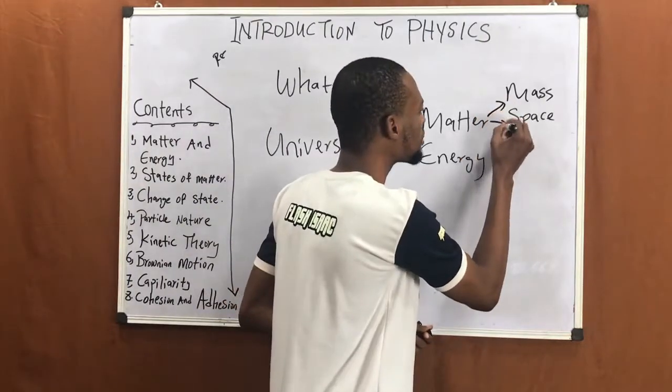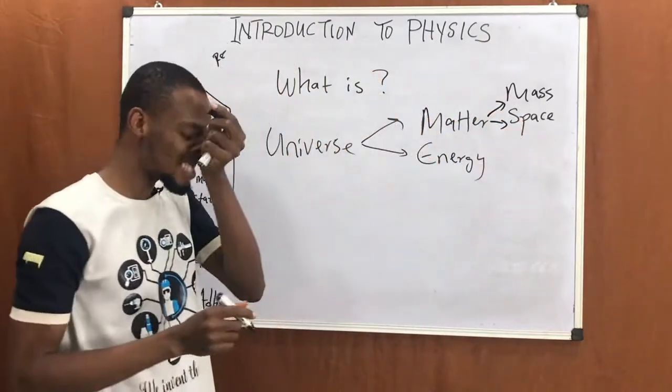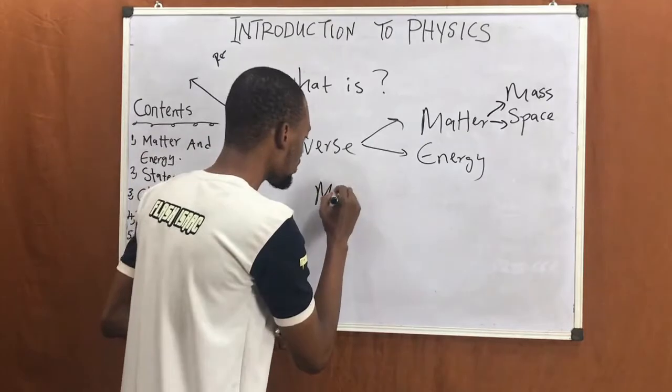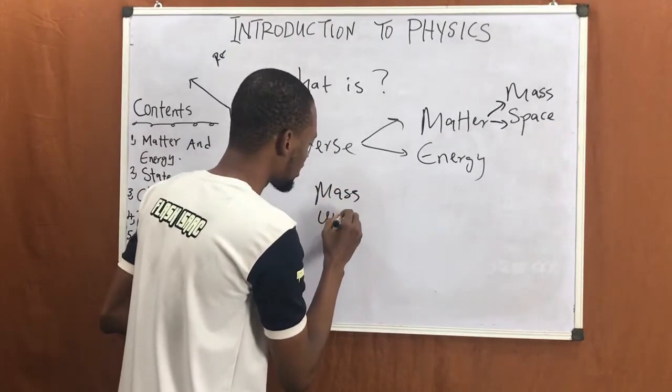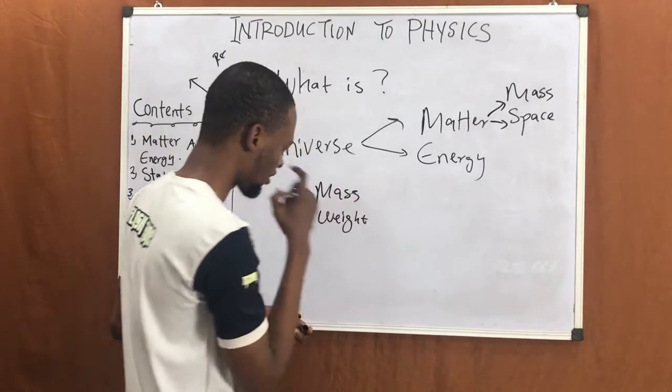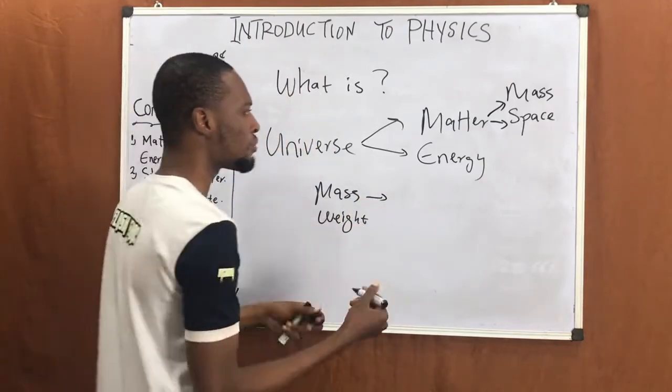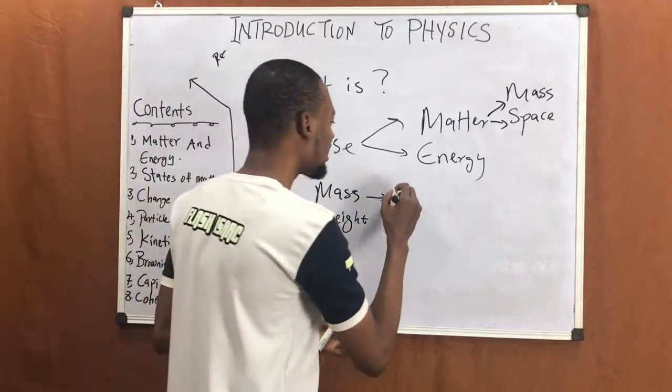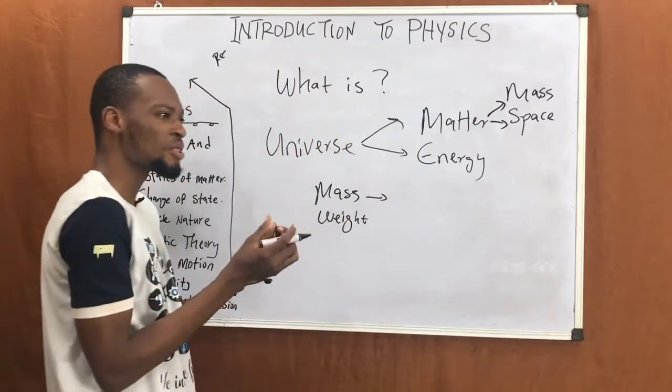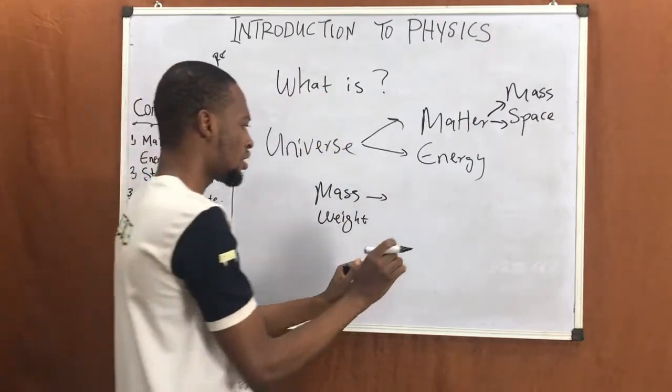Since matter is anything that has mass, the difference between mass and weight: mass is the quantity of matter in a body, or in layman language, how heavy something is on its own.